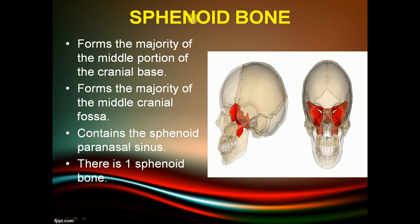The sphenoid bone is a wing-like bone that forms the majority of the middle cranial fossa. It contains the sphenoid paranasal sinuses. There is only one sphenoid bone.